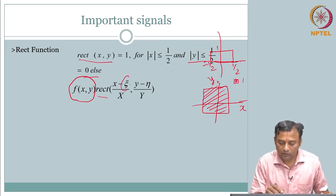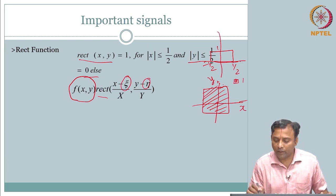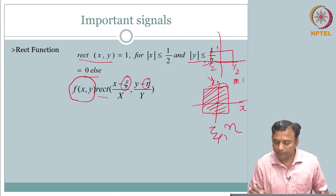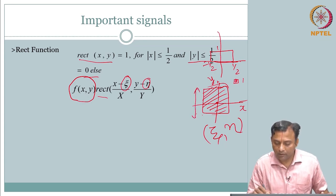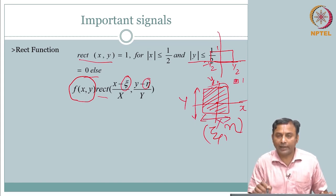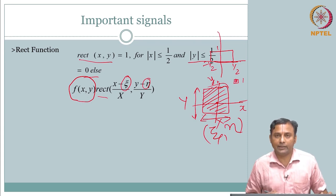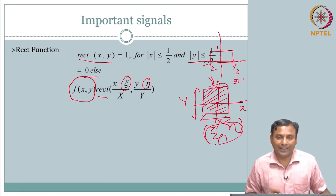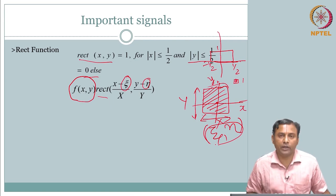This is the offset. Instead of centering at 0, 0, I can move this rectangle to different locations and center it around some arbitrary epsilon and eta. I can have a rectangle of width and height x and y centered around epsilon and eta. You can pick areas — that is where this becomes very useful mathematically. That is one important function.